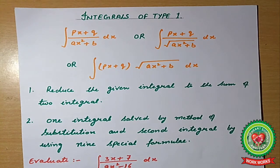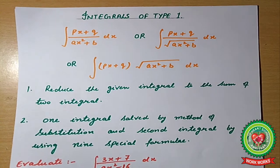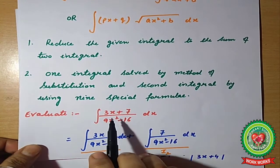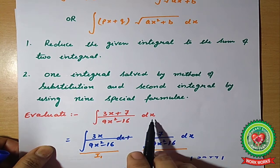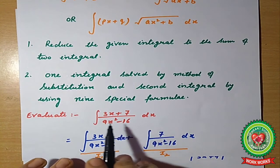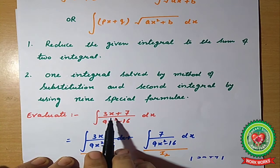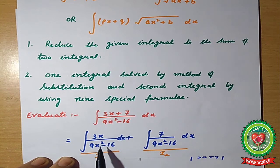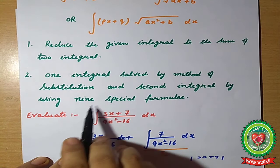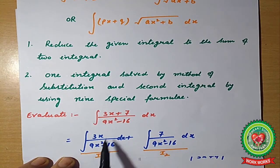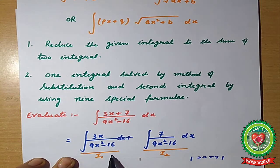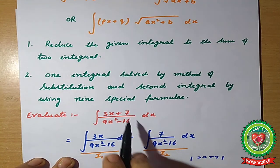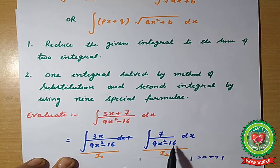The example is: evaluate the integral of (3x + 7) upon (9x² − 16) with respect to x. Using the numerator, we divide the full integration into two integrals: I1 = ∫ 3x/(9x² − 16) dx, and I2 = ∫ 7/(9x² − 16) dx.